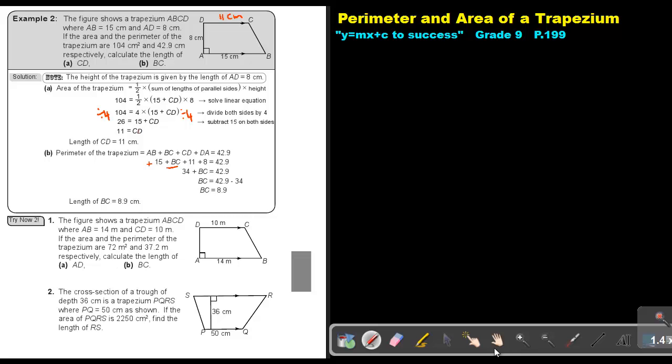I want you to do for me, try now, try now to just number one, number A, as well as number B. You can stop the video, and as soon as you are finished, you can continue with the video. So, we are at try now, two. And we're going to start with number one, A.